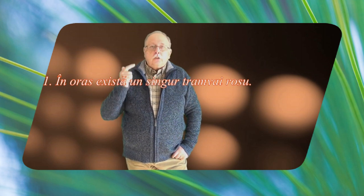Un om care minte întotdeauna face o afirmație despre un oraș: Toate tramvaele din oraș sunt roșii. Știind că, așa cum v-am spus, omul minte întotdeauna, care dintre afirmațiile următoare este cu siguranță adevărată? 1. În oraș există un singur tramvai roșu. 2.